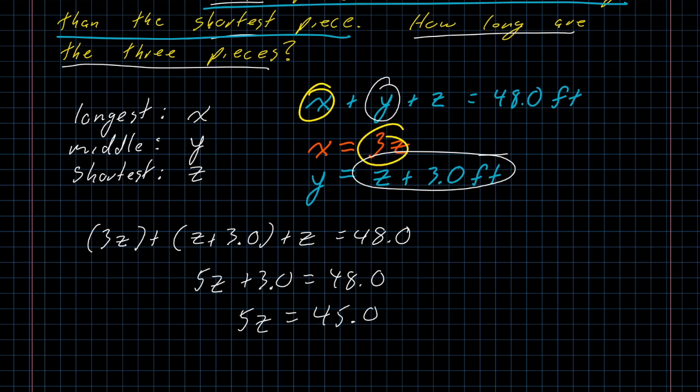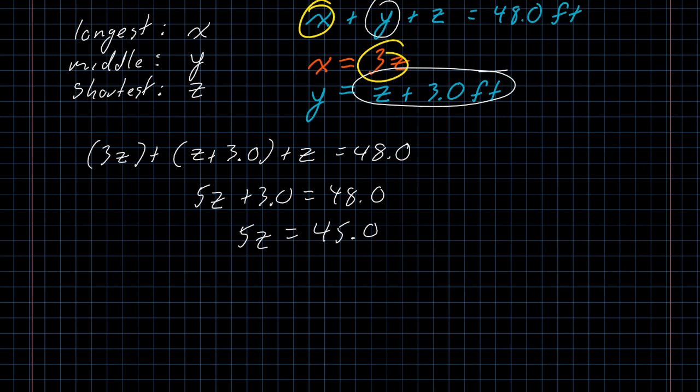And from here, I'm going to assume that that 5 on the z is an exact value. Very often, the coefficients on variables do turn out to be exact values because they come from literally adding things together. I have five things that are each of length z. I have exactly five of them. The length is approximately z, but the approximation is all in the z, not in the 5. And so from that, I know that when I divide here, the only thing that matters is the approximate value 45.0, which has three significant digits. And I get that z is 9.00 feet.